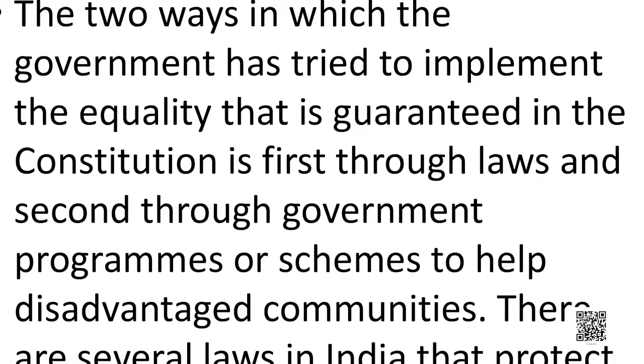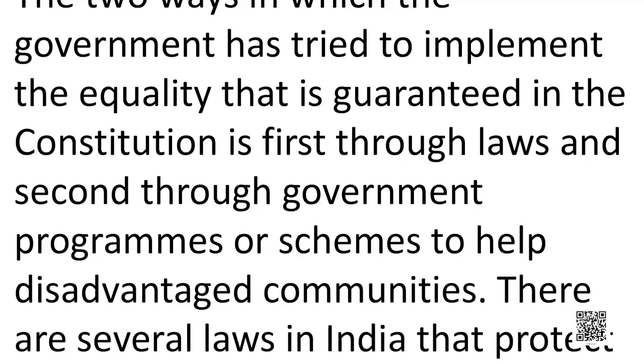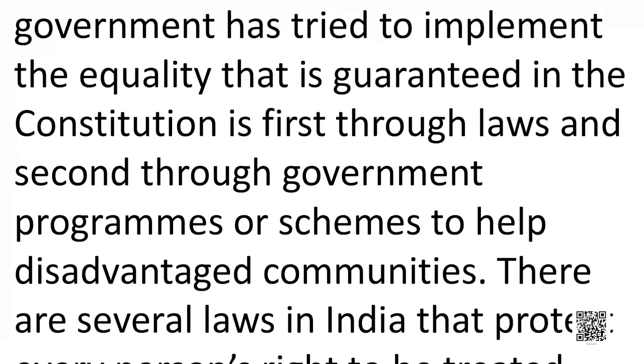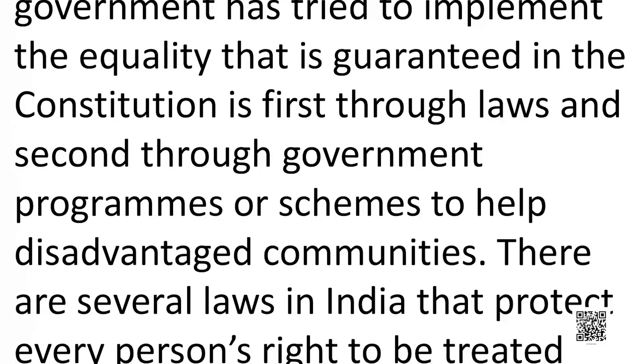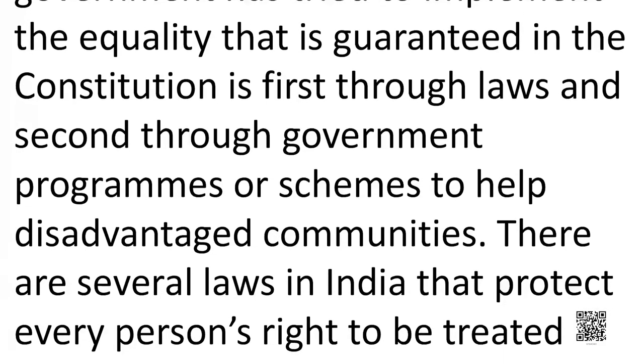Let us recall: every person has to obey the same laws; no person can be discriminated against on the basis of religion, race, caste, place of birth, or gender; every person has access to all public places; and untouchability has been abolished. The two ways the government has tried to implement the equality guaranteed in the Constitution are: first, through laws; and second, through government programs or schemes to help disadvantaged communities.